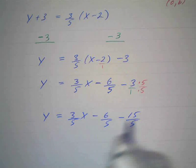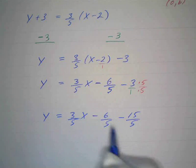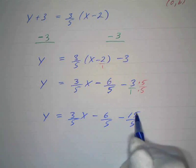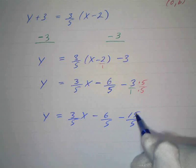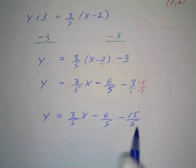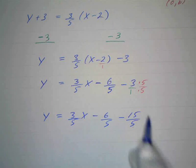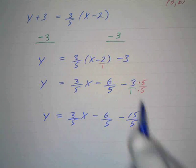And now I can combine these because they're both fifths. This is like negative 6 apples and minus 15 apples. And 15 over 5 is the same thing as 3. We've just written it in a form that we can add because it has the same denominator as the 6 fifths. But 15 over 3 is the same thing as—I'm sorry, 15 over 5 is the same thing as 3.